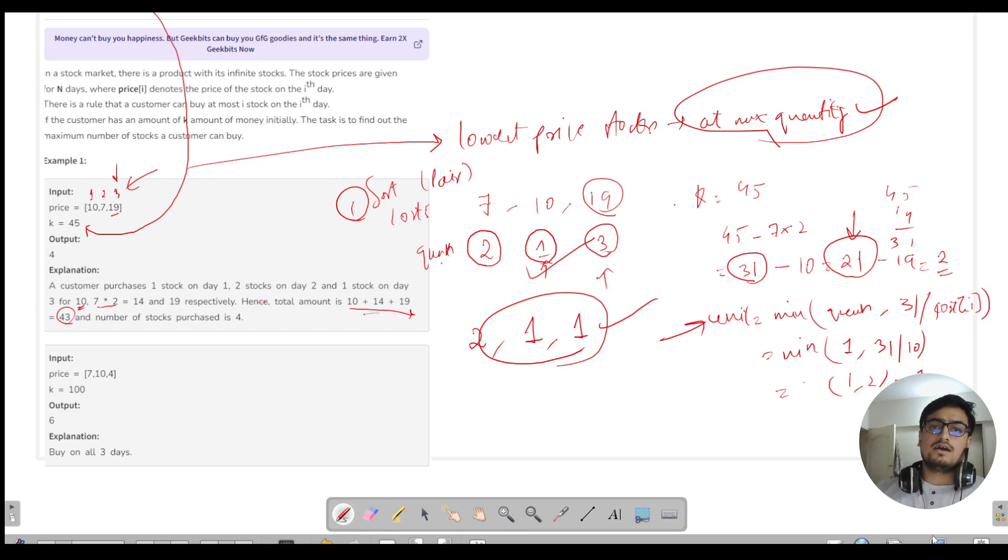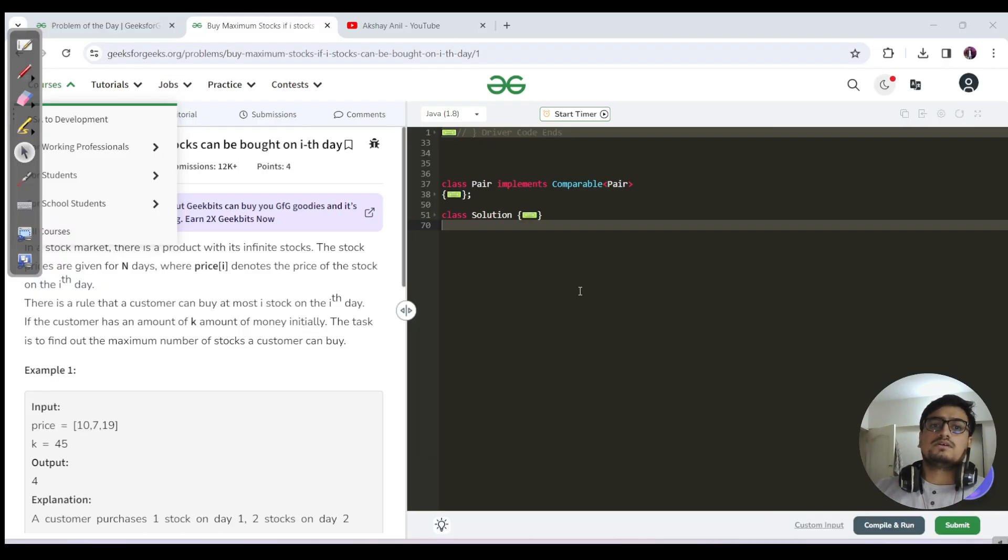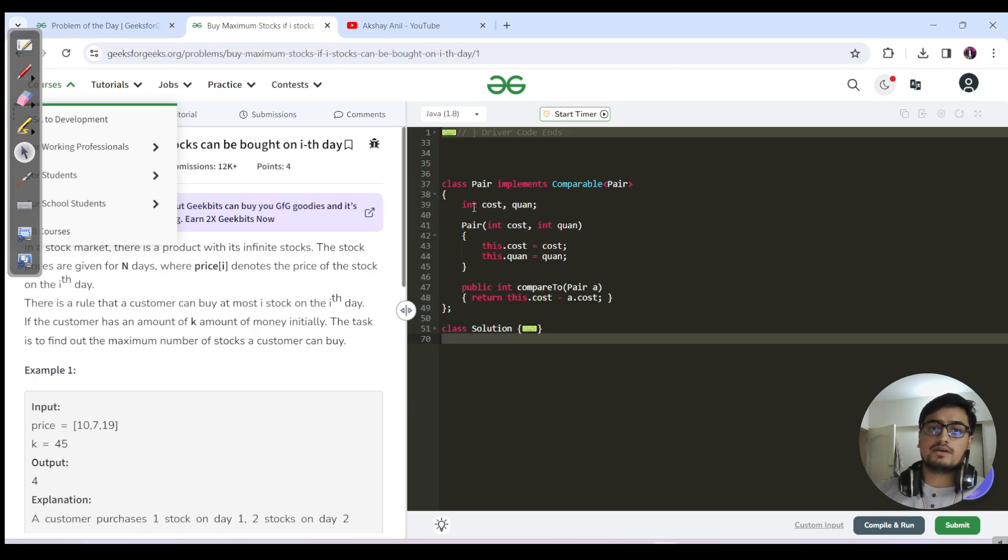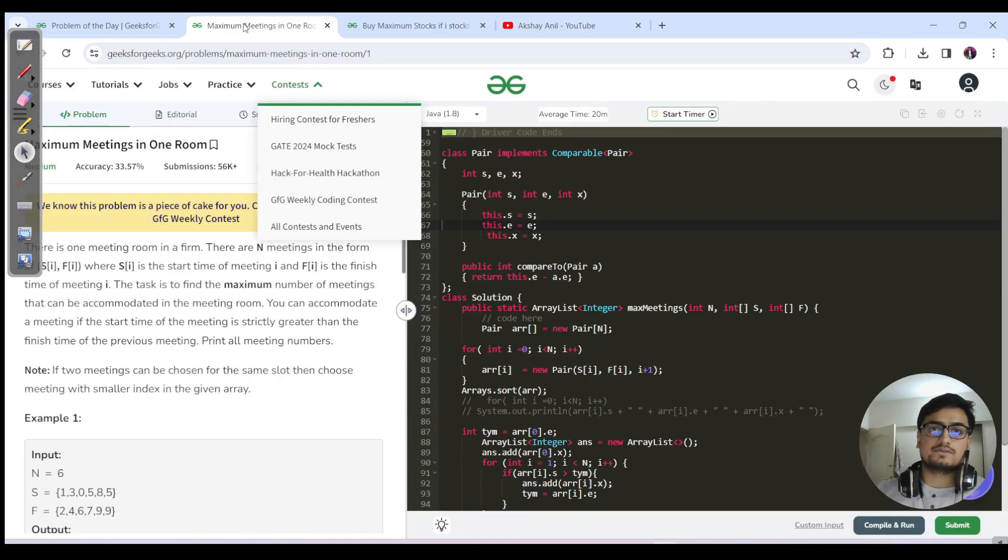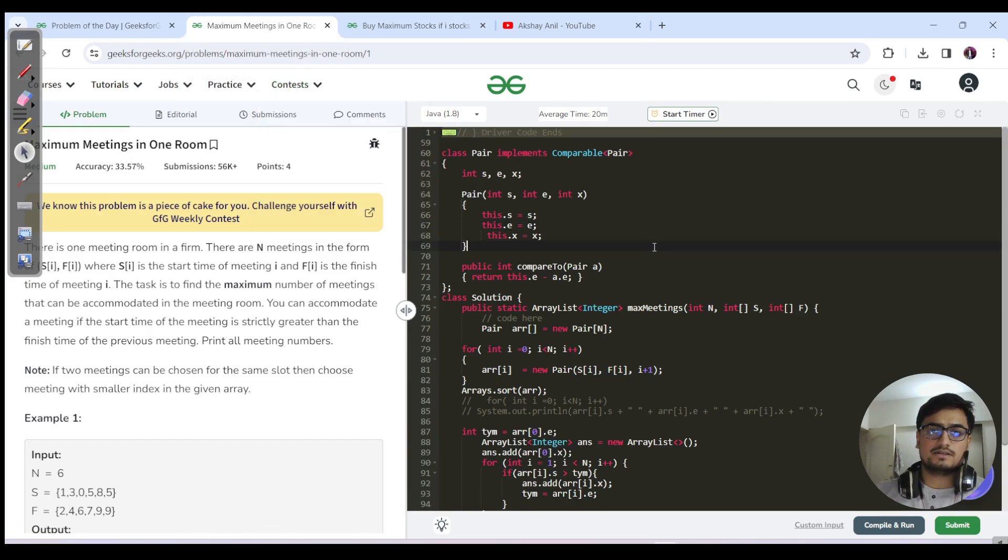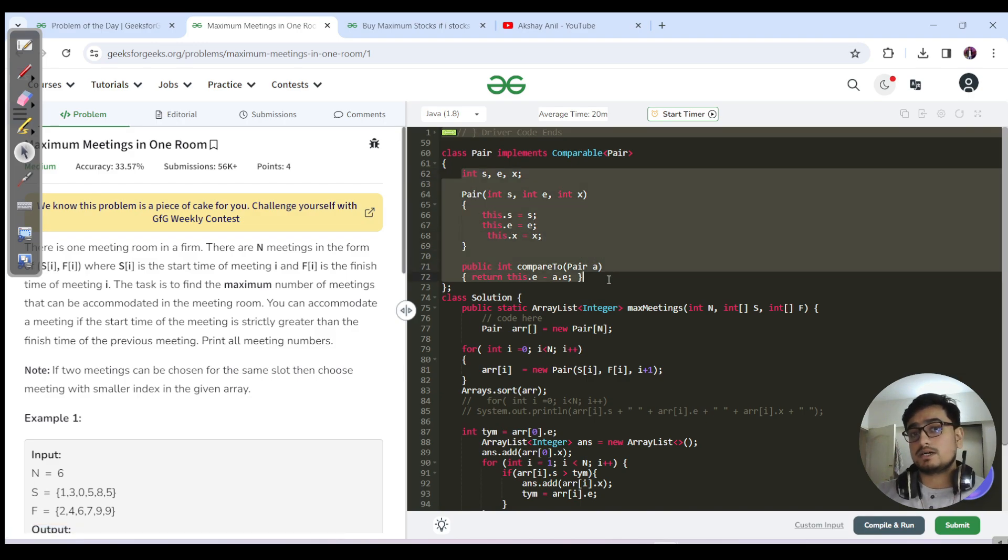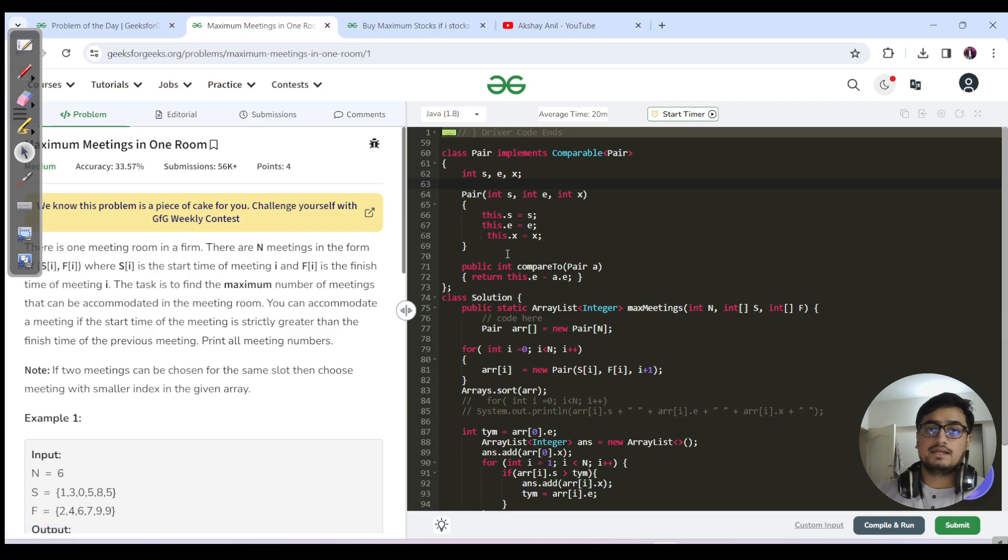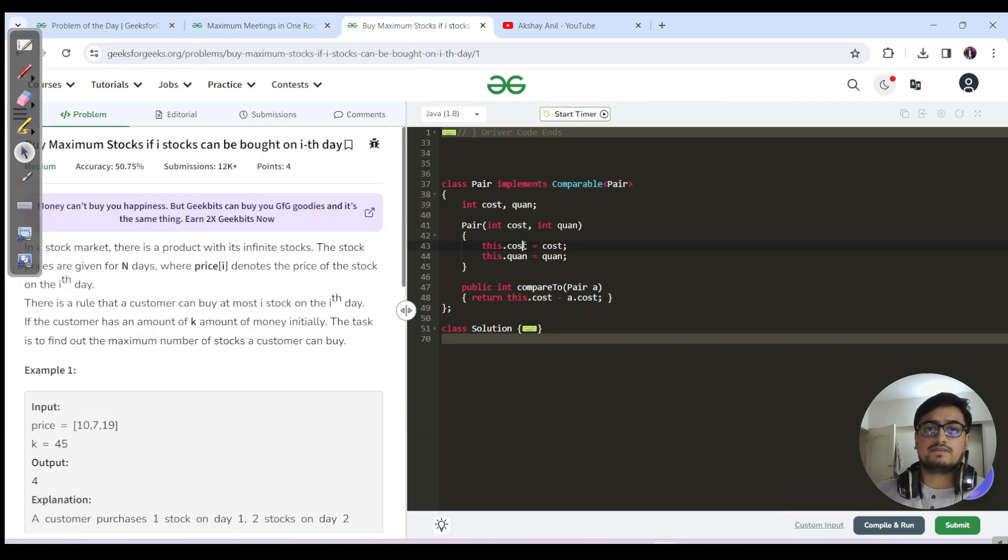That's the code in Java. I hope you've tried it. We have a pair with two parameters: cost and quantity. It implements Comparable, similar to the previous problem. There were three requirements, three parameters to be passed, so we sorted it according to the second parameter. Similarly, we've sorted it according to the cost parameter.